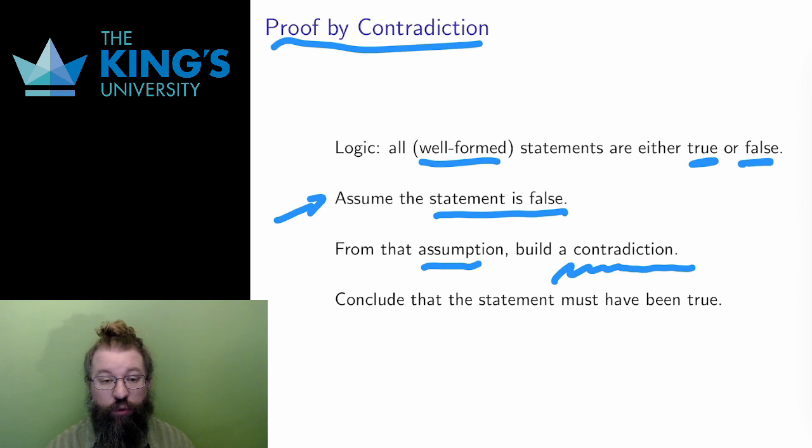The contradiction can take many forms: a contradiction of some statement I know is true, an impossibility of a statement being both true and false, or some other situation which cannot make sense. Since I end up with this contradiction, my original assumption must have been wrong. And since I assumed the statement was false, the statement therefore must be true.